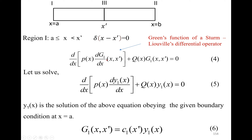We are going to solve for G₁. The solution is taken as y₁, where y₁(x) is the solution of this equation obeying the given boundary condition at x equals a. So the Green's function in region 1 is: G₁(x, x') = C₁(x') · y₁(x). Our aim is to find the constant C₁(x') and substitute it to get the Green's function.